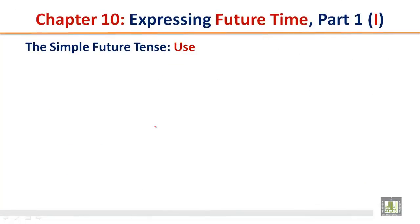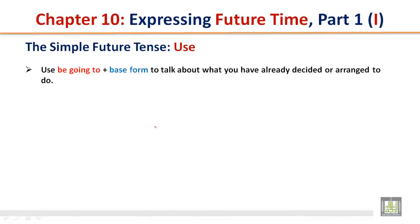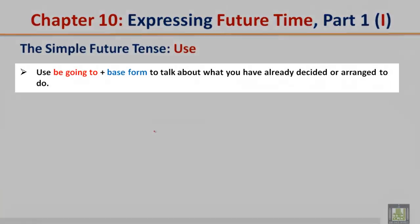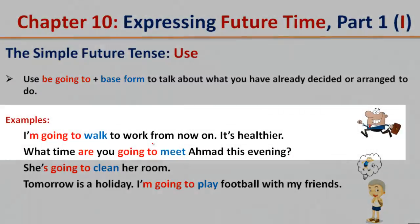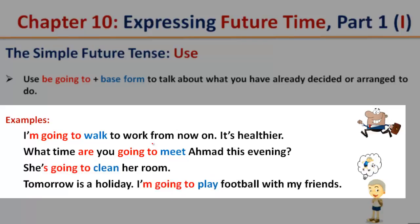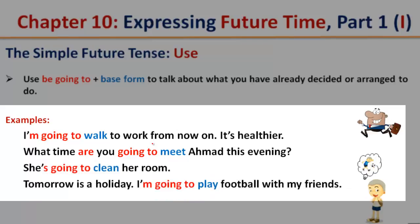The simple future tense — use. Use be going to plus the base form to talk about what you have already decided or arranged to do. Examples: I'm going to walk to work from now on — it's healthier. What time are you going to meet Ahmad this evening? She's going to clean her room. Tomorrow is a holiday — I'm going to play football with my friends.